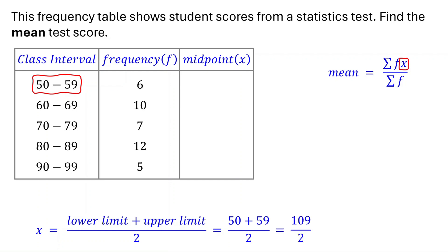Adding them gives us 109, and dividing by 2, we get 54.5. That's the midpoint of the first class. Similarly, the midpoint of the second class is going to be 60 plus 69 divided by 2, which equals 64.5. Repeat this process for the remaining classes.